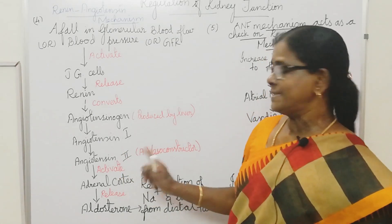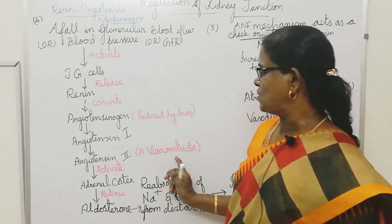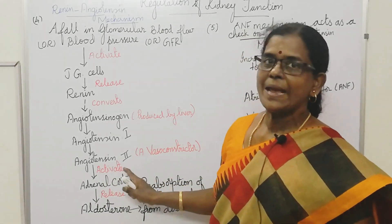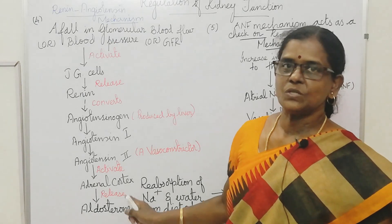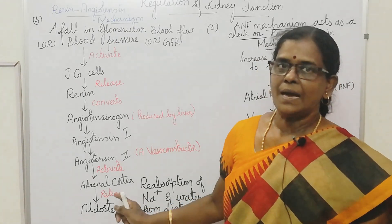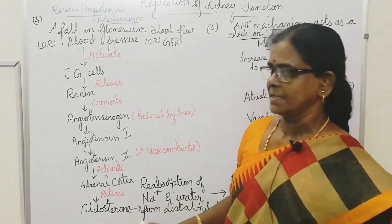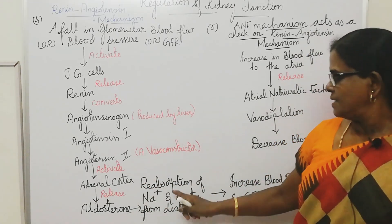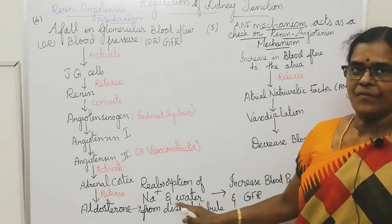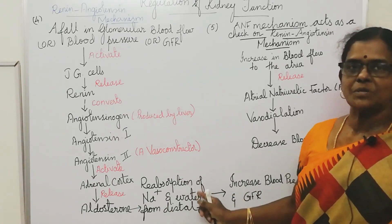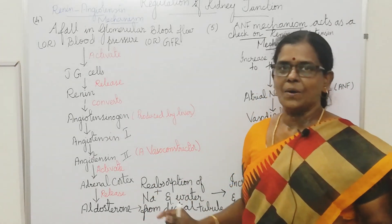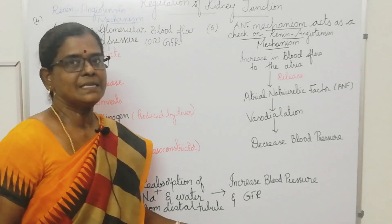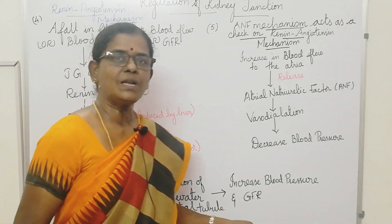Angiotensin 2 is an excellent vasoconstrictor — it constricts the blood vessels. This angiotensin 2 can activate the adrenal cortex to release aldosterone. Aldosterone is released from the adrenal cortex, and it causes reabsorption of sodium and water from the distal convoluted tubules. This leads to increased blood pressure or glomerular filtrate rate.